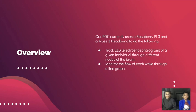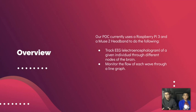Starting with the overview: our POC currently uses a Raspberry Pi and a Muse 2 headband, and they both work together to track EEG waves. Those EEG waves come through individual nodes throughout an individual. We also monitor the flow of each wave through a line graph and display it.